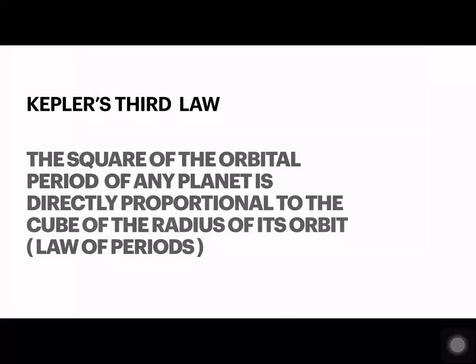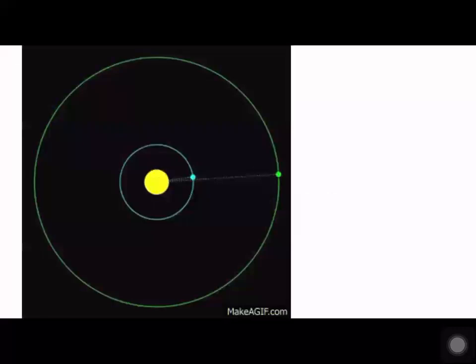Kepler's third law: the square of the orbital period of any planet is directly proportional to the cube of the radius of its orbit. This is called the law of periods.